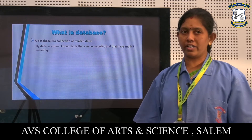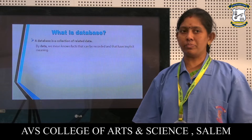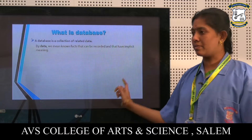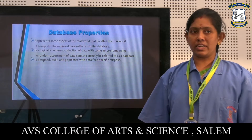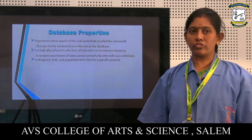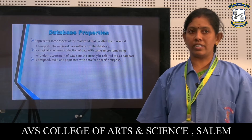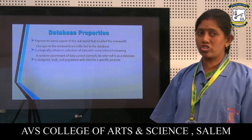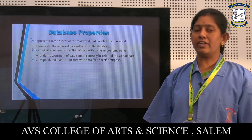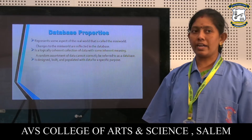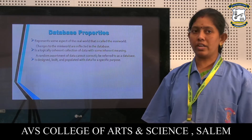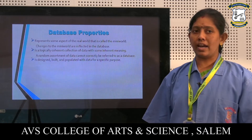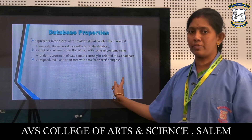A database is a collection of related data. By data we mean it is a known facts that can be recorded and that have implicit meaning. Database properties: it represents some aspect of the real world, that is called the mini world. The changes to the mini world are reflected in the database. It is a logically coherent collection of data with some inherent meaning. A random assortment of data cannot correctly be referred to as a database. It is designed, built and populated with data for a specific purpose.